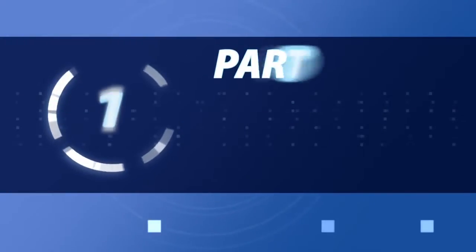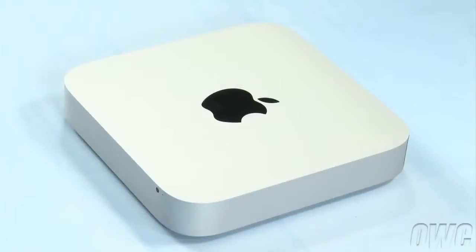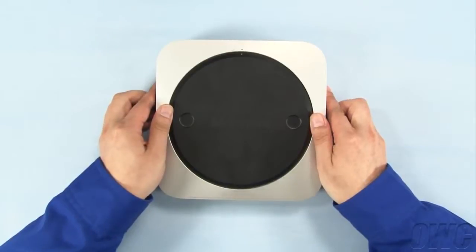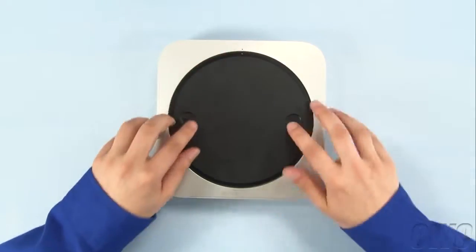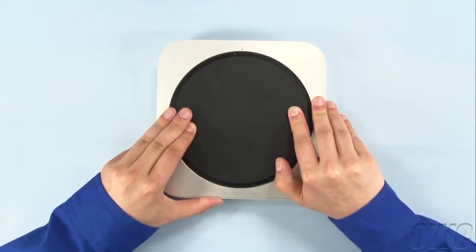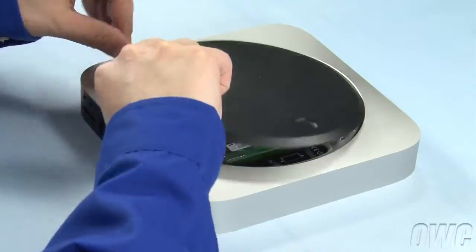The first step is to flip the Mac Mini over. On the bottom, you'll see a dot on the black plastic cover and two on the case itself. Rotate the cover counterclockwise until the two white dots are aligned. You can then gently lift the cover off.